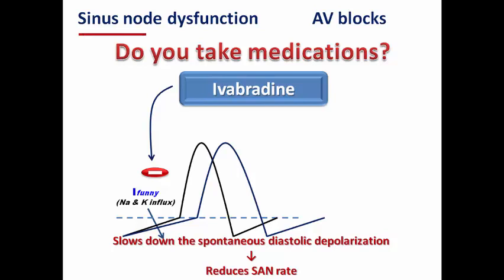So ivabradine can result in iatrogenic sinus node dysfunction by this mechanism. But can it cause AV blocks? Does this effect affect the AV node?